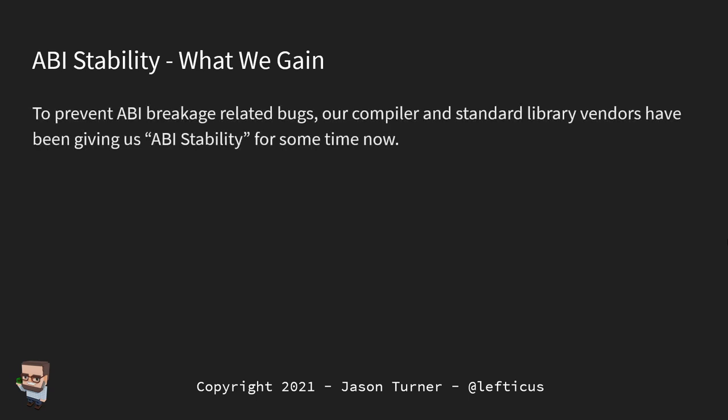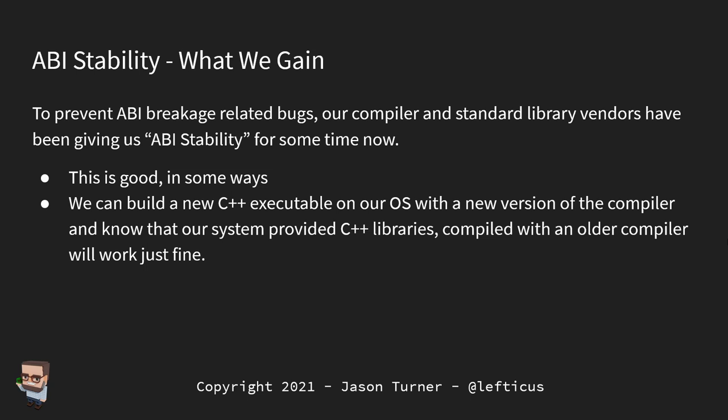So what does ABI stability gain us? To prevent ABI-related bugs, our compiler and standard library vendors have given us ABI stability. Visual Studio has maintained it from 2015 through 2017 to 2019, and they're planning for 2021 to still maintain ABI stability. It is good in some ways: we can build a new executable with a new compiler and know that system-provided C++ libraries compiled with an older compiler will still work fine. We don't have to recompile everything just because we got a new compiler version. But this makes us stuck.